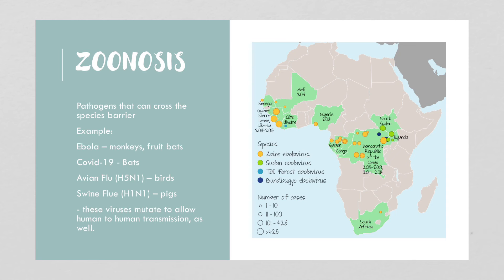Zoonoses are pathogens that can cross the species barrier. Examples include Ebola, which originated from monkeys or fruit bats; COVID-19 from bats; avian flu H5N1 from birds; and swine flu H1N1 from pigs. These viruses can mutate to allow human-to-human transmission, which is where things become especially concerning.